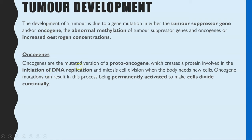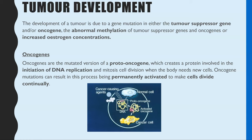Oncogenes are the mutated version of a proto-oncogene. The proto-oncogene codes for a protein involved in controlling cell division — specifically, it initiates DNA replication in interphase, so mitosis can occur when the body needs new cells. However, if you get a mutation in the proto-oncogene, we then call it an oncogene, and it can become permanently activated — constantly causing cells to divide even when you don't need new cells in that location. That is how you end up with excess growth of cells forming a tumor.